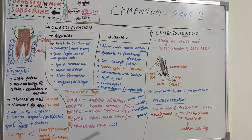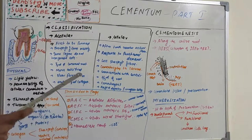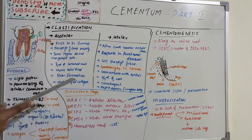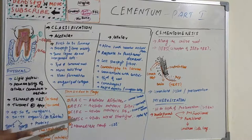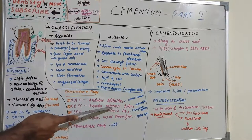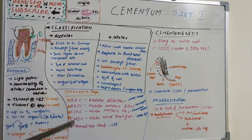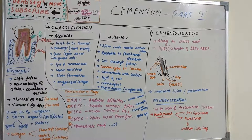Cellular intrinsic fiber cementum (CIFC) is the third type. It is formed both pre- and post-eruptively and is synthesized by cementoblasts, but does not contain extrinsic Sharpey's fibers. Recall that extrinsic refers to Sharpey's fibers — so where 'intrinsic' is specified, only intrinsic fibers are present, with no Sharpey's fibers.